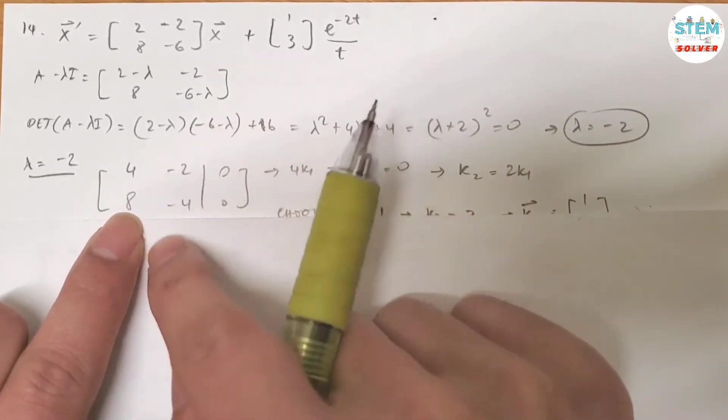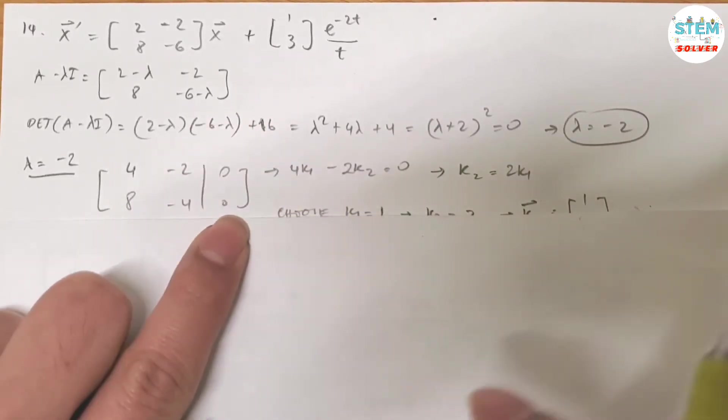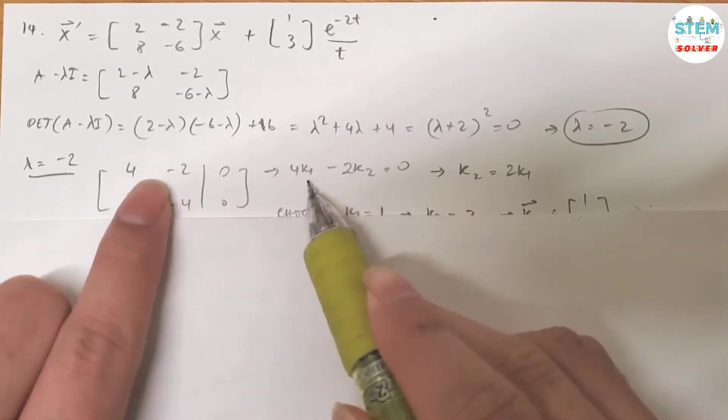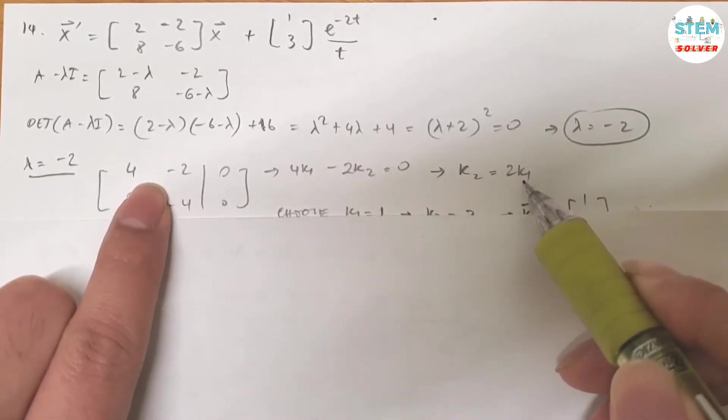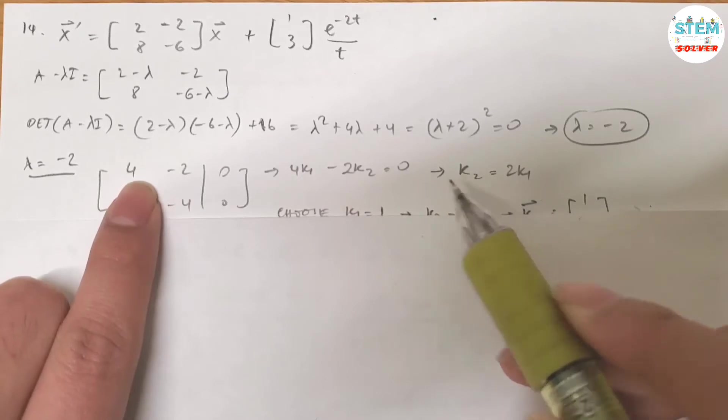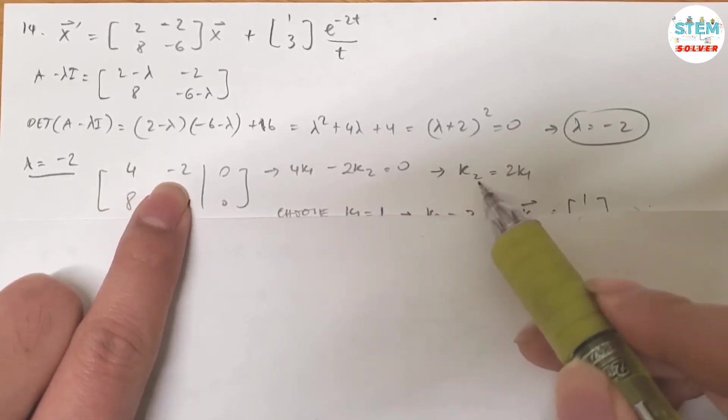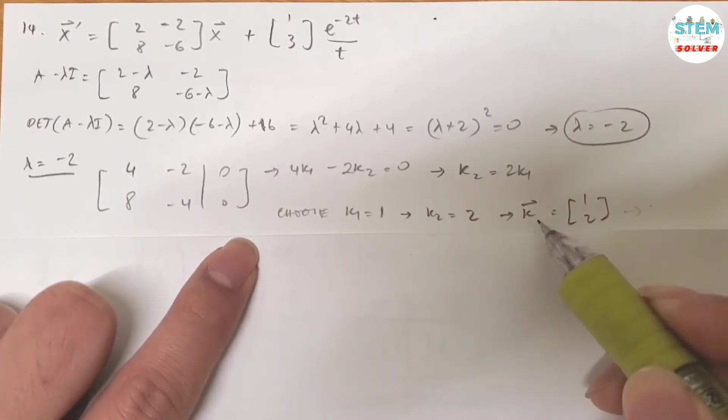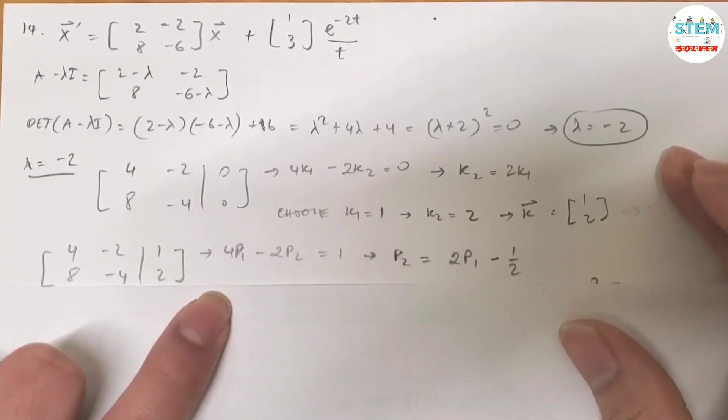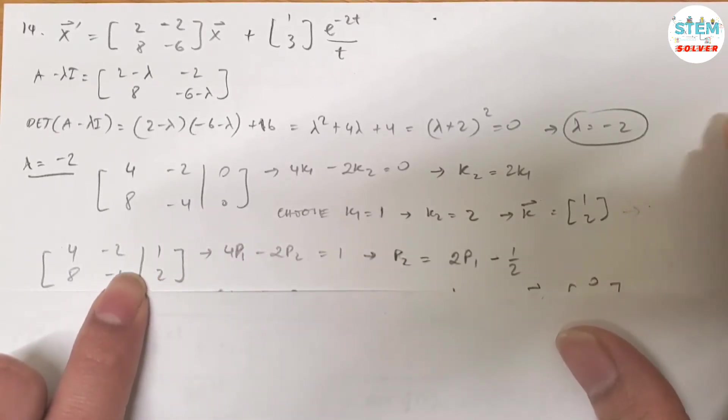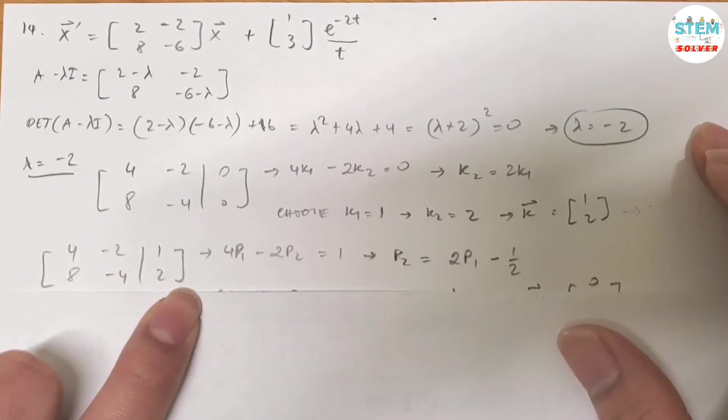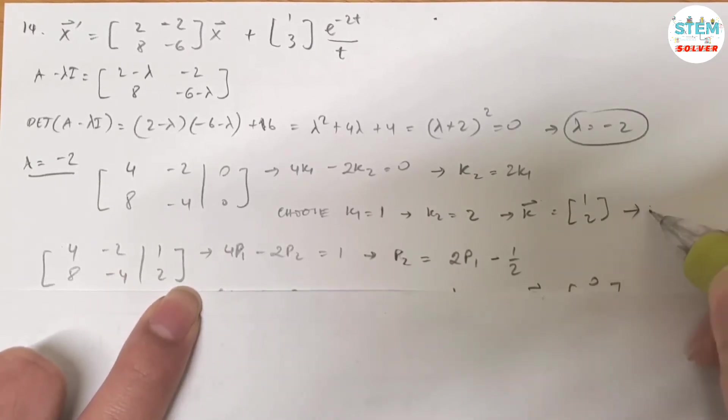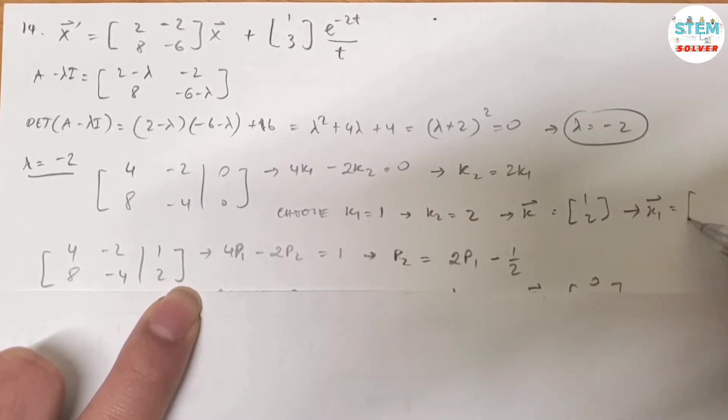For lambda equals negative 2, plug it into A minus lambda I, it gives you this matrix augmented with 0. From the first equation, I know that 4k1 minus 2k2 equals 0. Solve for k2, I got 2k1. If I choose k1 = 1, then k2 = 2, and vector k is [1, 2]. So my vector x1 is equal to [1, 2]e to the negative 2t.